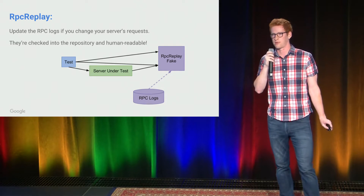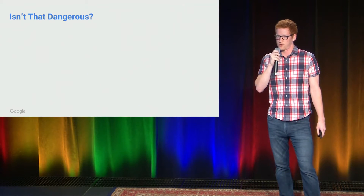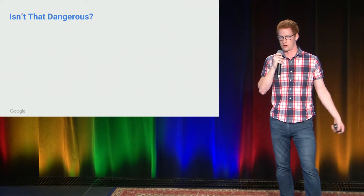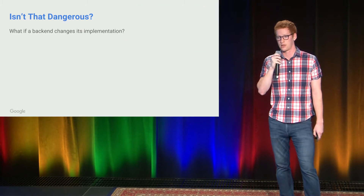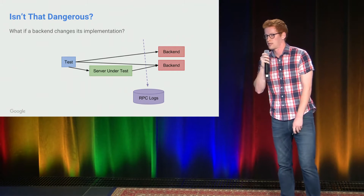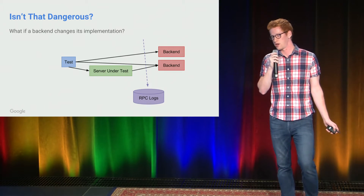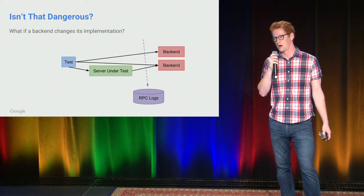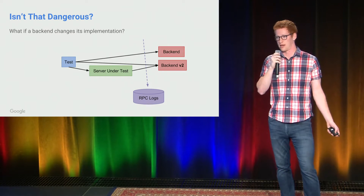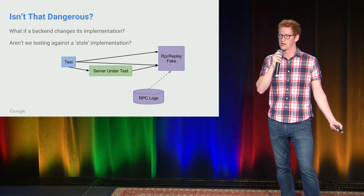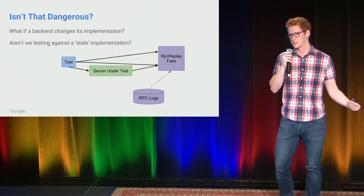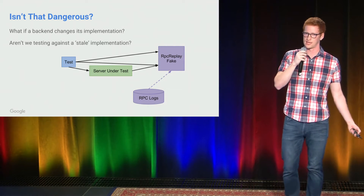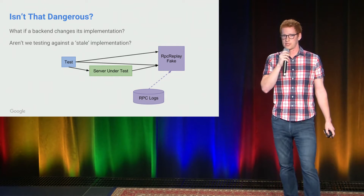This is important and we'll talk about it a little bit later. The first question people have when they hear about this is, 'That sounds really dangerous — what happens when a backend changes its implementation?' This is a real issue. Let's say our backend team works really hard and pushes out version 2. The problem is that now our tests are exercised against the logic that was in version 1, because that logic is recorded and stored in the RPC log.